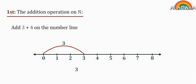To add 3 and 4 on the number line, move from 0 to 3. Then move another 4 steps toward the right. The answer will be 7.